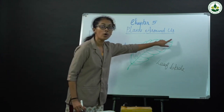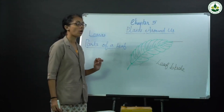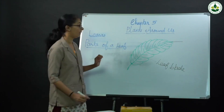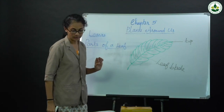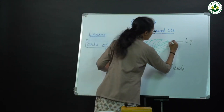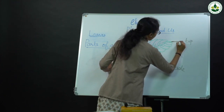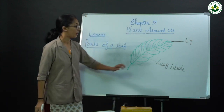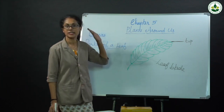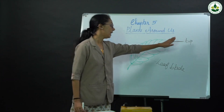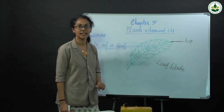Then the topmost part of a leaf — this topmost part is known as the tip. Topmost part of a leaf is known as tip. The flat part is known as leaf blade, and the topmost part of a leaf is known as tip.